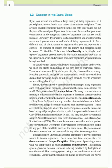If you look around you will see a large variety of living organisms — potted plants, insects, birds, your pets or other animals and plants. There are also several organisms that you cannot see with your naked eye but they are all around you. If you were to visit a dense forest, you would probably see a much greater number and kinds of living organisms. Each different kind of plant, animal or organism represents a species. The number of species known and described ranges between 1.7 to 1.8 million. This refers to biodiversity — the number and types of organisms present on earth. New organisms are continuously being identified as we explore new areas.